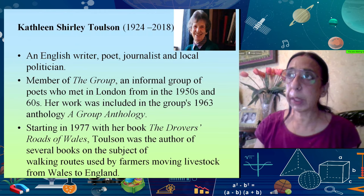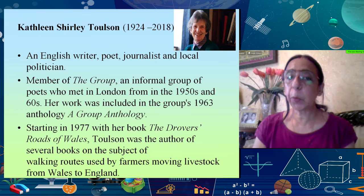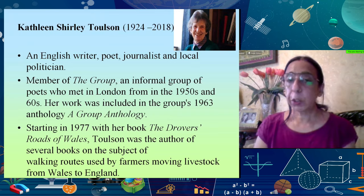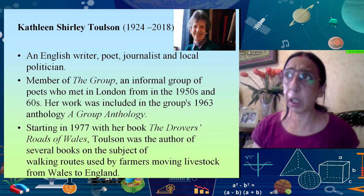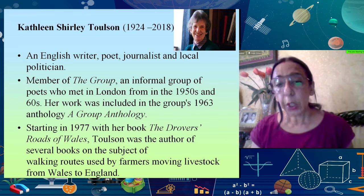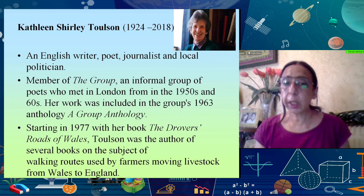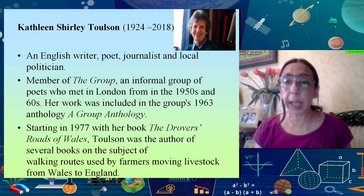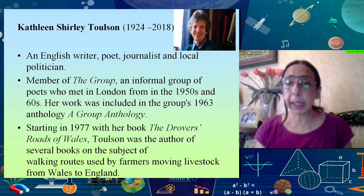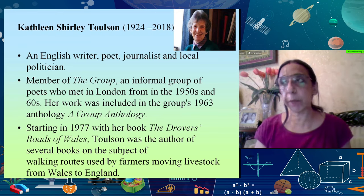So the second poem — A Photograph — is by a poet called Shirley Toulson. She was born in 1924 and passed away very recently in 2018. She's an English poet, journalist, and local politician. She was part of an informal group of poets called The Group. She is not a poet of great repute compared to Ted Hughes, but this is a very interesting poem that is extremely engaging for any reader.